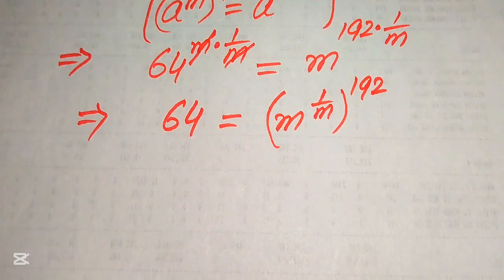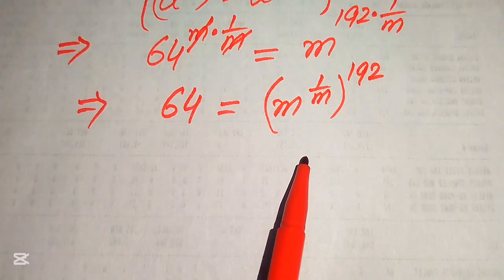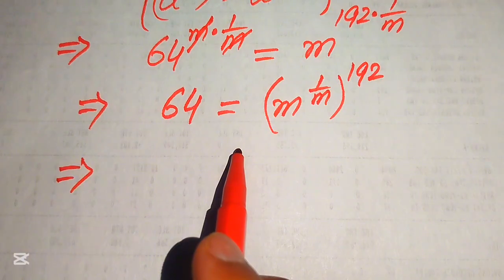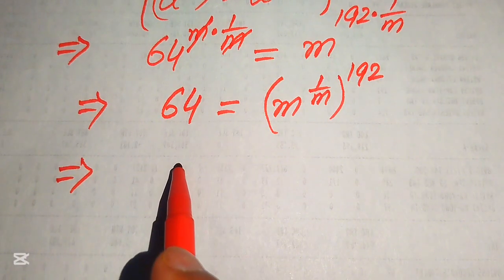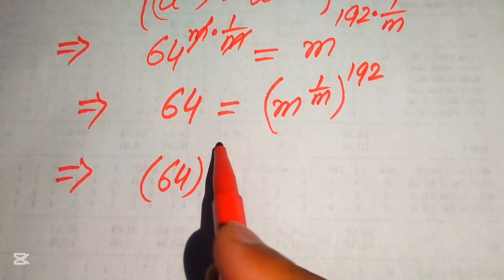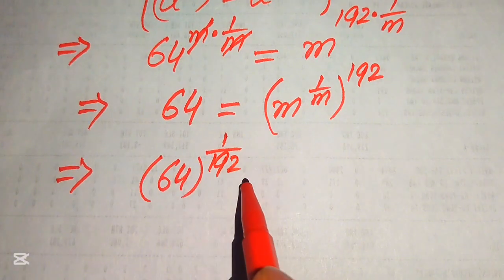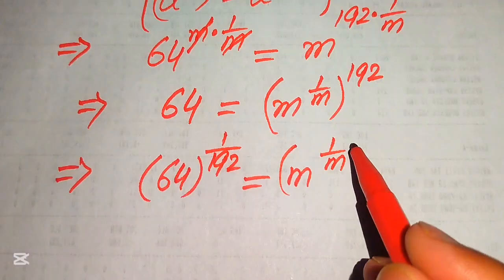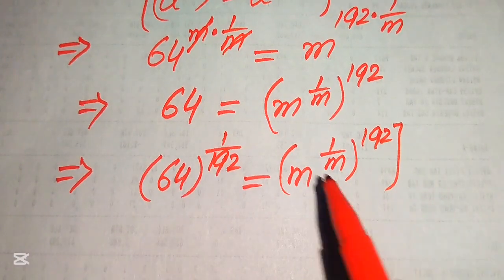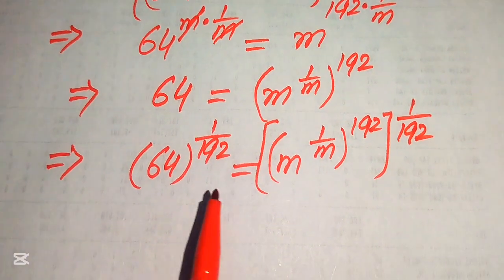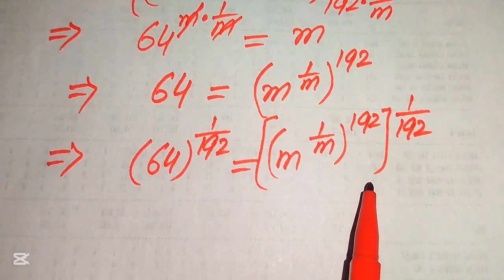In the next step, to move the 192 to the left hand side, we take 1 over 192 power on both sides. So it is written as 64 to the power of 1 over 192 equals m to the power of 1 over m, and its whole power is 192, and that whole power is 1 over 192.